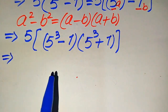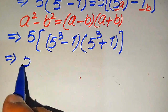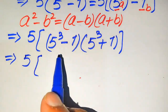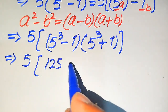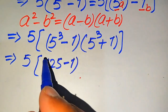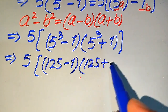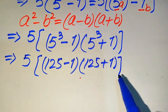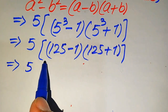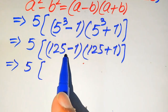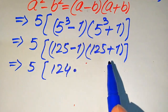Since the calculator is not allowed, we do all steps by hand. We know that 5 cubed equals 125, so the expression becomes 5 times (125 minus 1) times (125 plus 1).